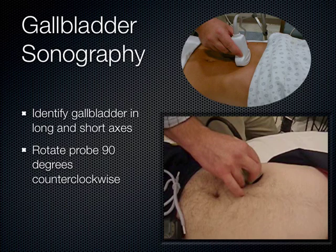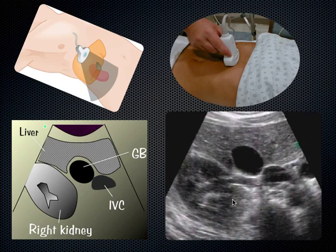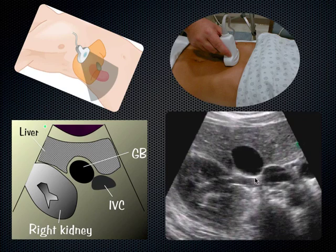Once you go from the long axis to the short axis, things start to look like circles. You see this circle, and this circle, and another circle — basically the aorta, the IVC, and the gallbladder. The way I know that's the gallbladder — one is the main interlobar fissure, and the other is that in this axis, the gallbladder is the most anterior anechoic structure on the screen.